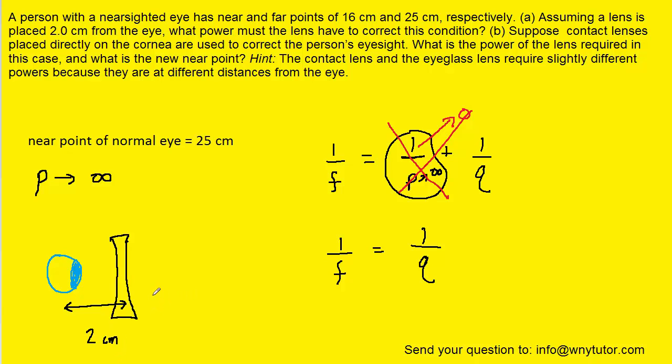What we want to do is have the lens project the image for faraway objects at the far point of her eye. The question notes that the far point was 25 centimeters. From this diagram, we can see that the distance from the lens to this far point would actually be 23 centimeters. This is the distance that we're going to use in the thin lens equation for Q.